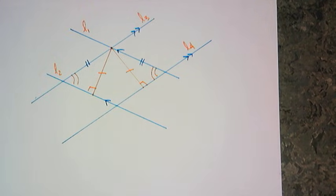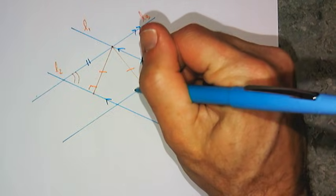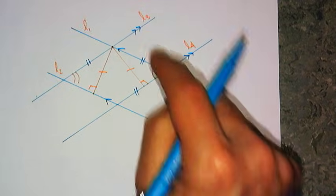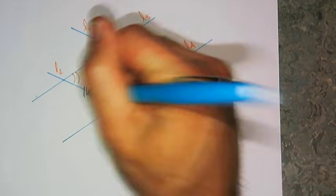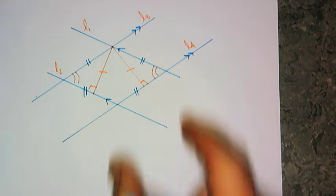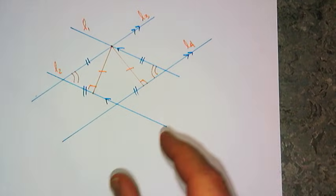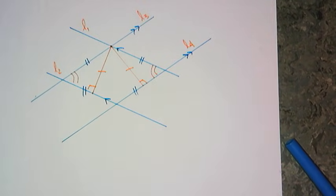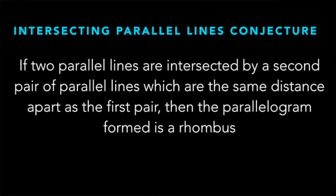I can further extend, using a conjecture from last night, that the opposite sides of a parallelogram are congruent — this one is congruent to this one, and this one must be congruent to this one. So I have shown that if I construct an intersection of two sets of parallel sides, the parallelogram formed is indeed a rhombus. This leads us to the first conjecture of the night, the intersecting parallel lines conjecture: if two parallel lines are intersected by a second pair of parallel lines which are the same distance apart as the first pair, then the parallelogram formed is a rhombus.